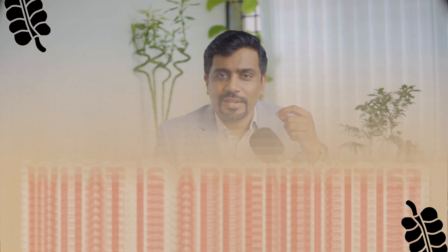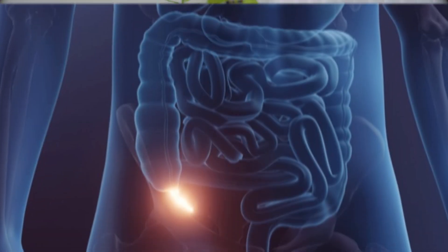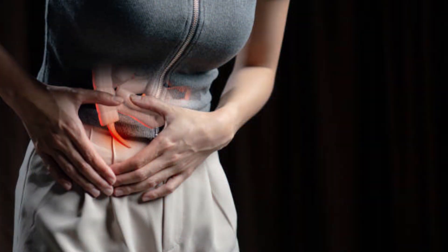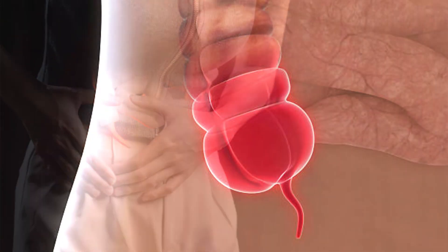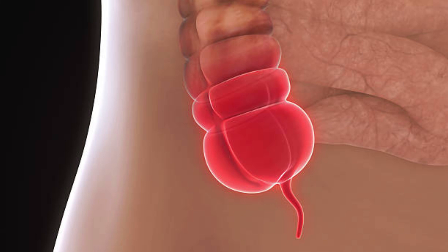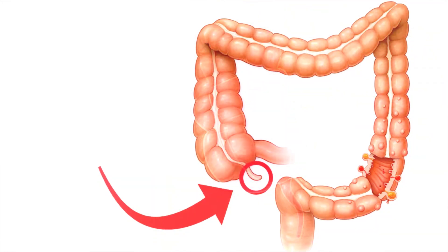The appendix is an organ located on the lower right side of the abdomen. It is a small finger-shaped organ that extends from the cecum, which is the first part of the large intestine. Historically, the appendix was believed to play a role in digestion, particularly in breaking down plant matter. However, with modern medical research, it has been shown that the appendix is not essential for digestion.